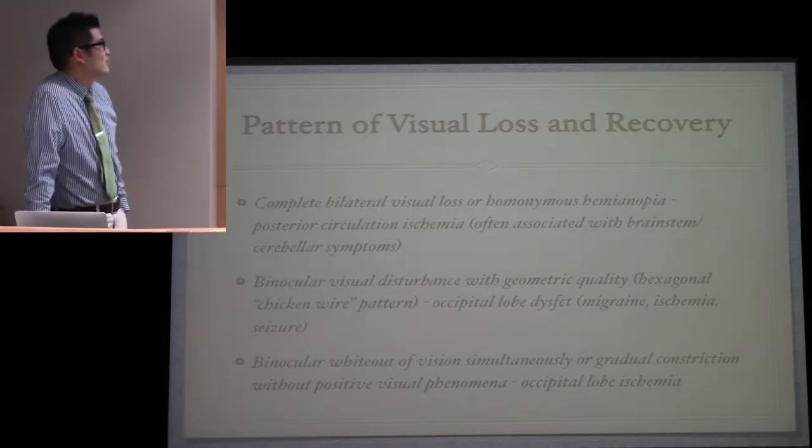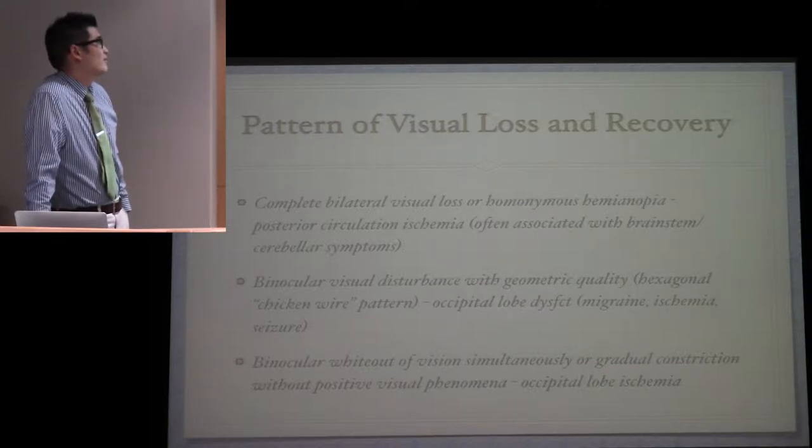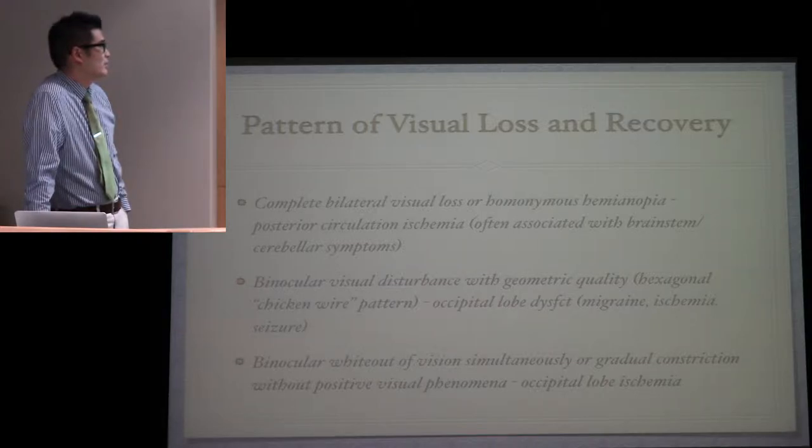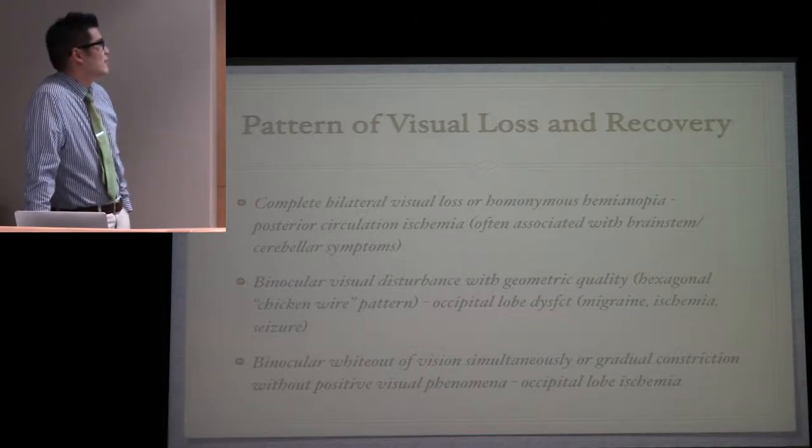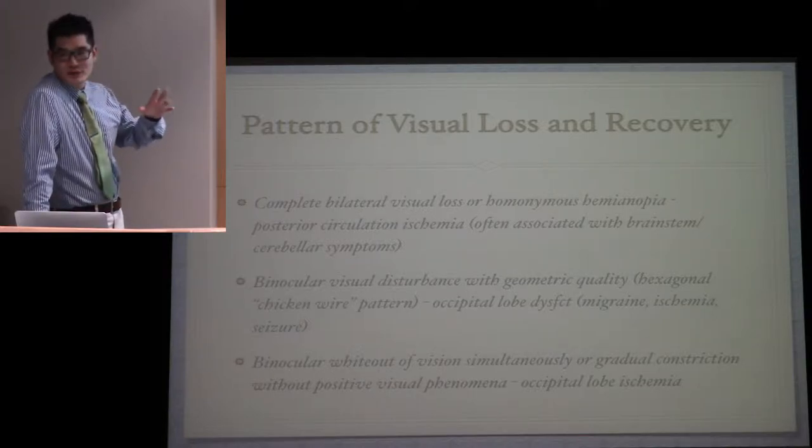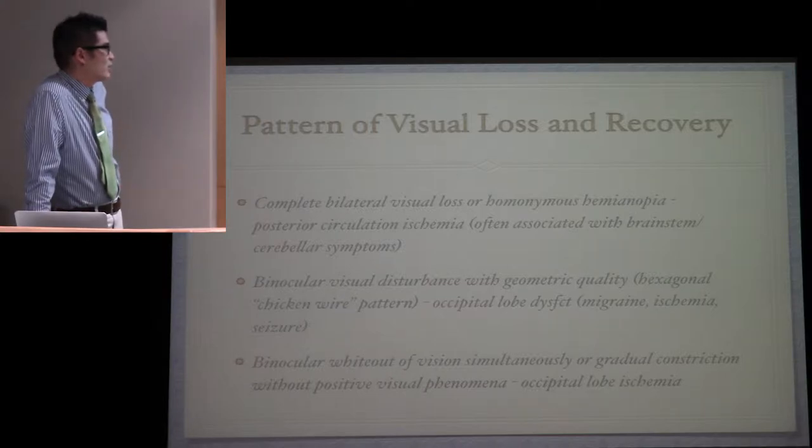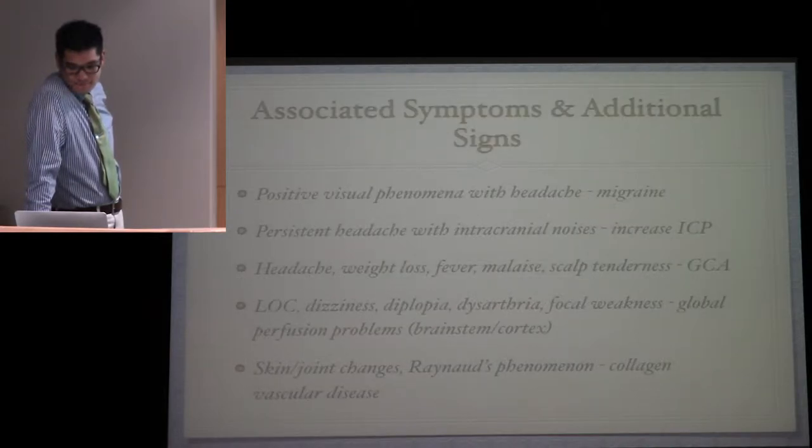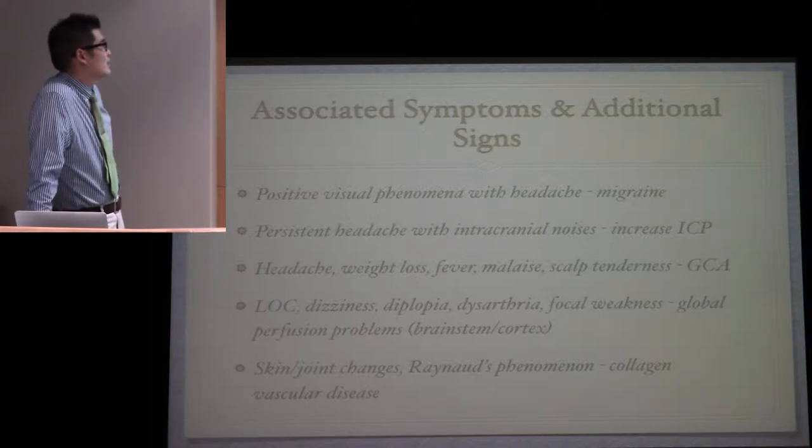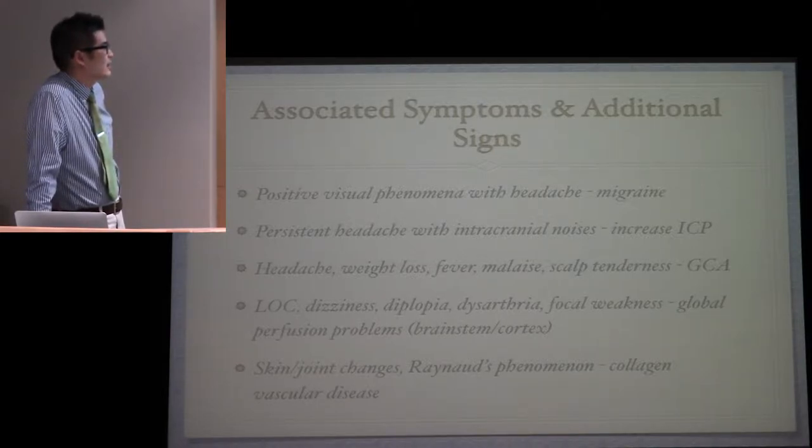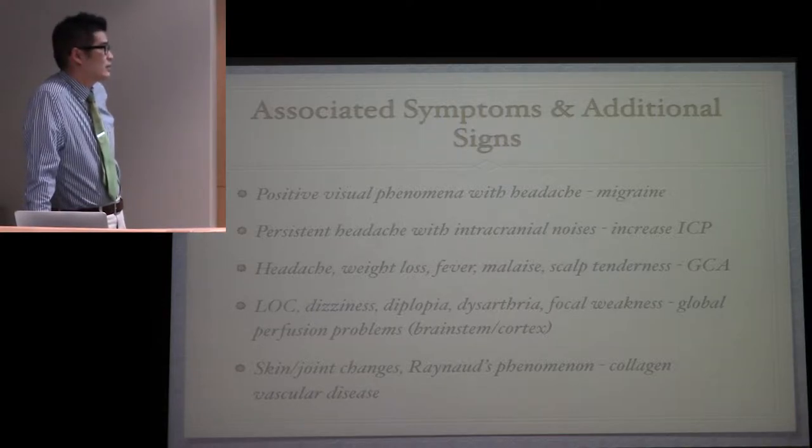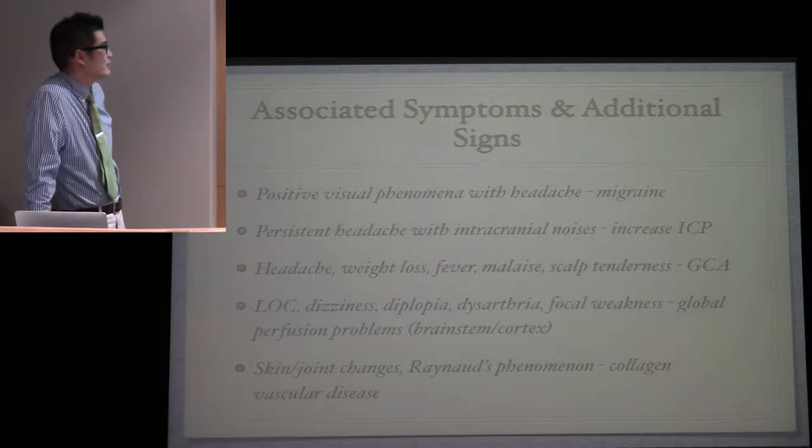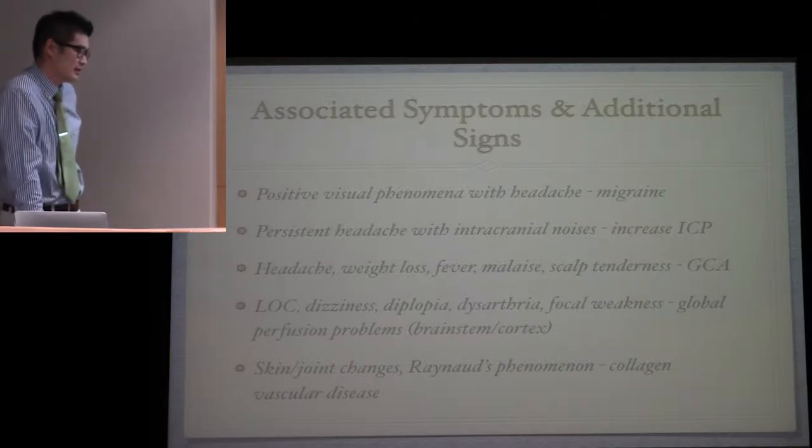Always think about posterior circulation ischemia when they have complete simultaneous bilateral visual loss or homonymous hemianopia. Binocular visual disturbance described with a geometric quality, typically hexagonal chicken wire pattern, suggests occipital lobe dysfunction. Associated symptoms: positive visual phenomenon with headache is classic migraine. Persistent headache with intracranial noises like pulsatile tinnitus - think increased intracranial pressure. GCA - scalp tenderness, jaw claudication, headache, weight loss, fever, and other constitutional symptoms.